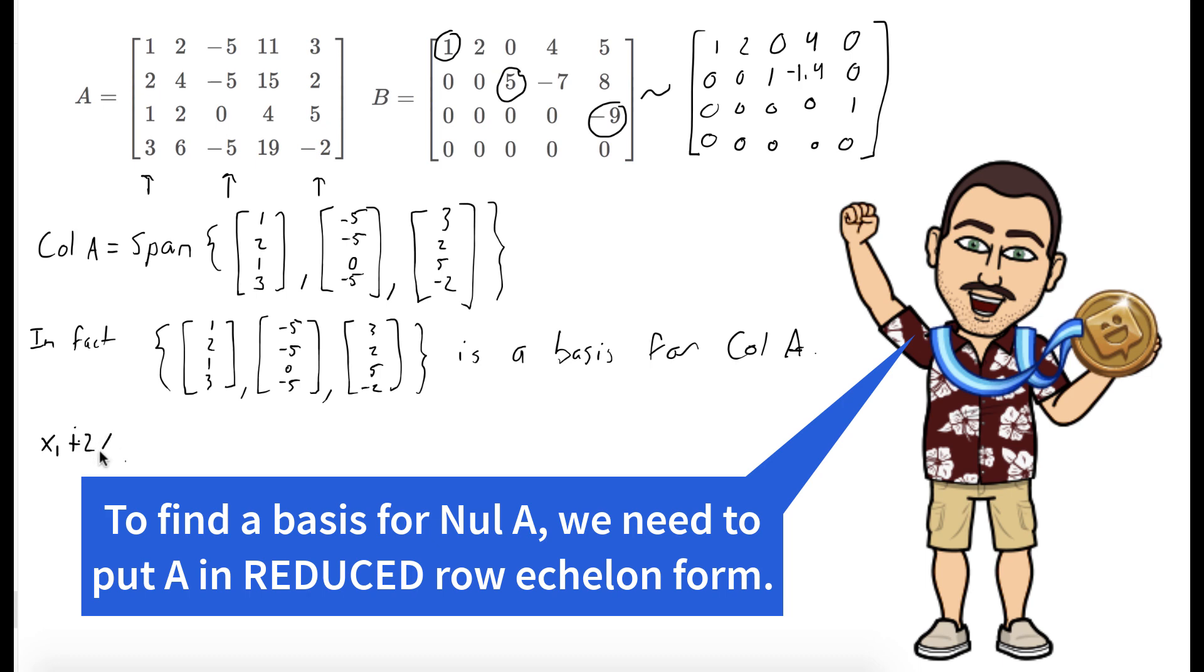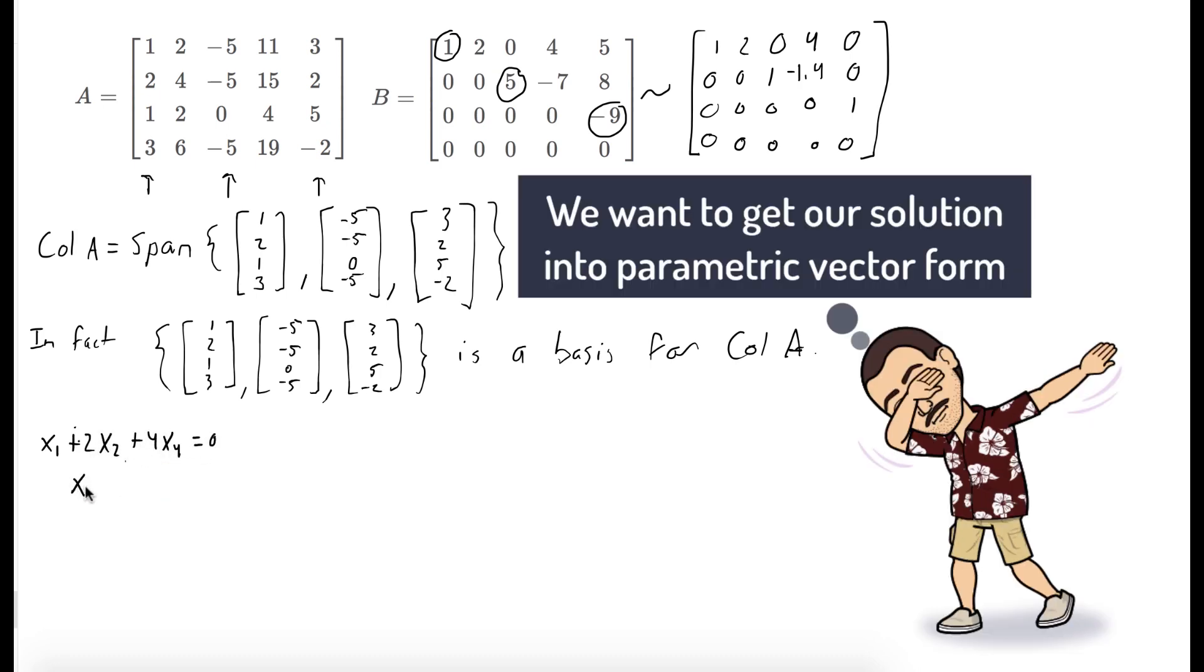And when we do that, each row corresponds to an equation. So the first row is x1 plus 2x2 plus 4x4 equals 0. The next row is x3 minus 1.4x4 equals 0. And the last row is x5 equals 0.